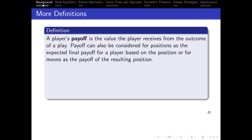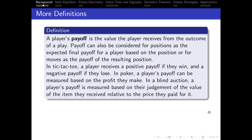A player's payoff is the value that a player receives from the outcome of a play. Payoff can also be considered for positions — as the expected final payoff for the player based on the position — or for moves, as the payoff for the resulting position. In tic-tac-toe, a player receives a positive payoff if they win or a negative payoff if they lose, usually represented as one and negative one. In poker, a player's payoff would be represented based on profit — chips they end with minus chips they started with. In a blind auction, a player's payoff is based on their judgment of the value of the item received relative to the price they paid.